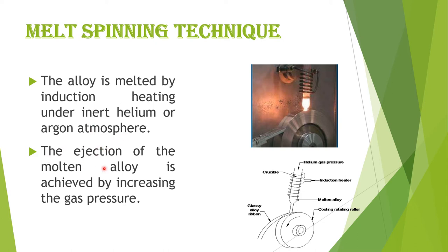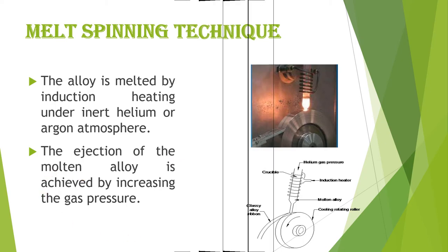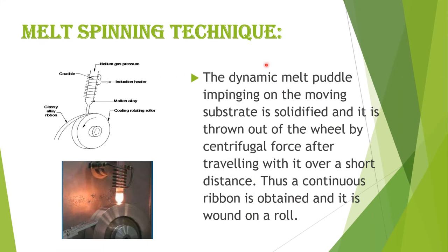The ejection of the molten alloy is achieved by increasing the gas pressure. The dynamic melt puddle impinging on the moving substrate is solidified and thrown out of the wheel by centrifugal force after travelling a short distance. Thus a continuous ribbon is obtained and wound on a roll.